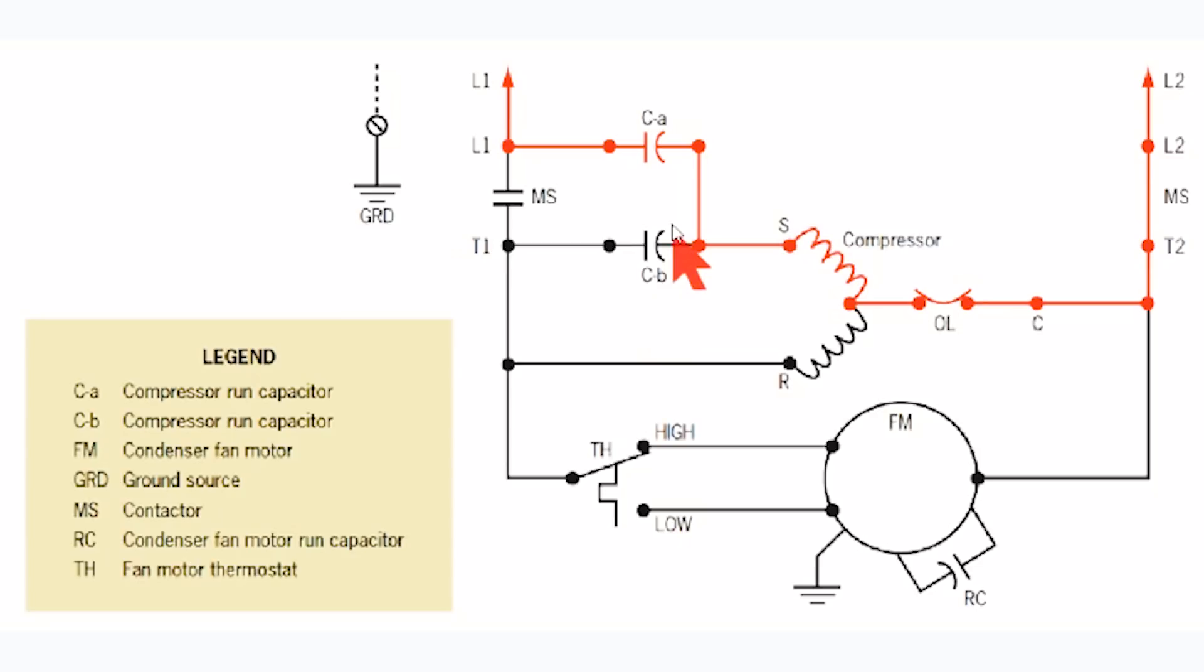But this diagram shows a setup where you have two paralleled capacitors - one connected on the load side of the contactor (MS is contactor). You have capacitor A, which is the compressor run capacitor, and capacitor B, which is also a compressor run capacitor. So they're both compressor run capacitors run in parallel, but one is fed with constant power from L1 and the other is broken through the compressor contactor.